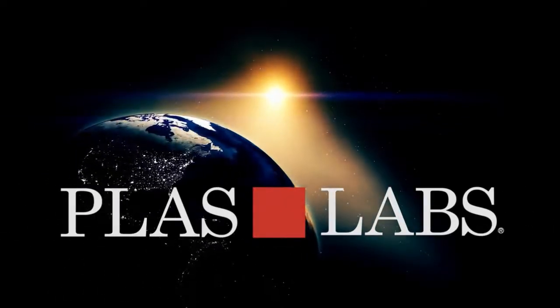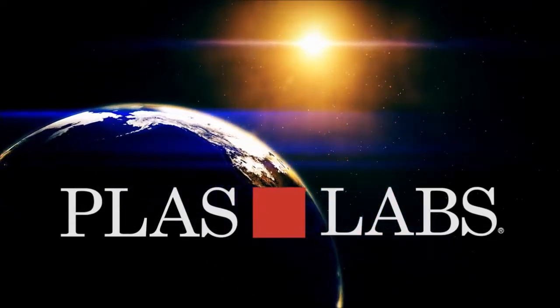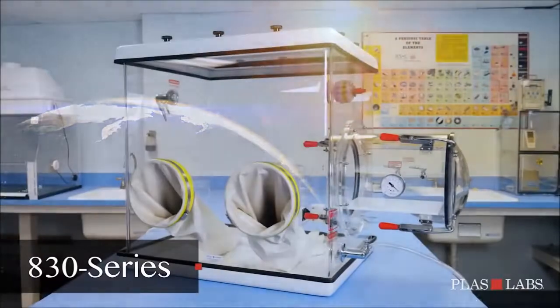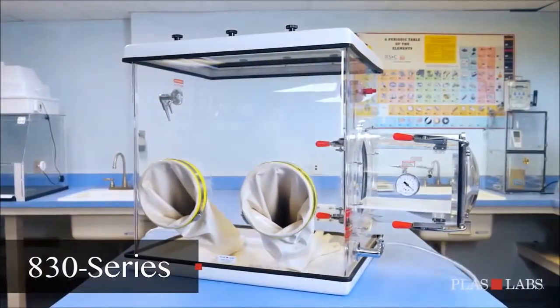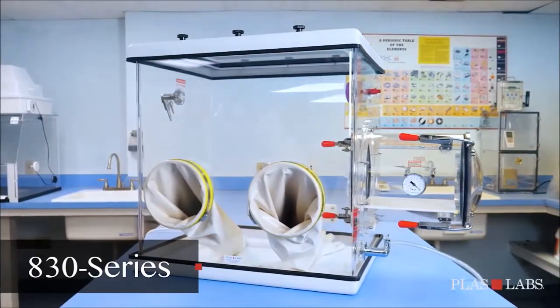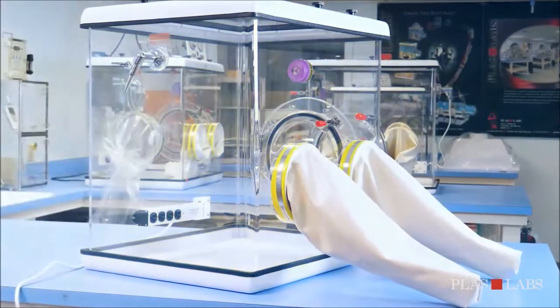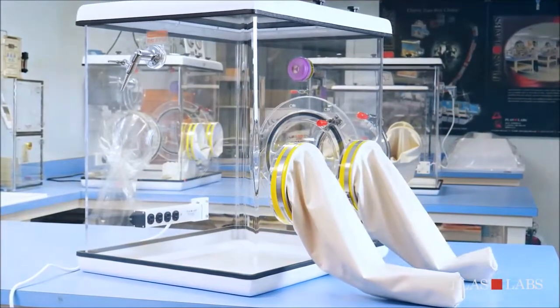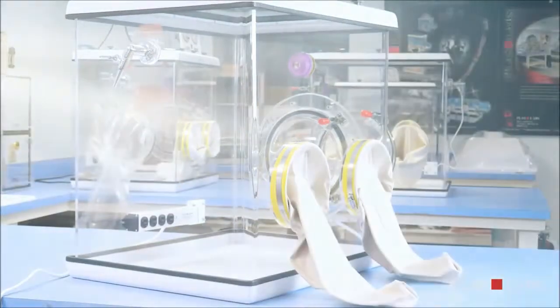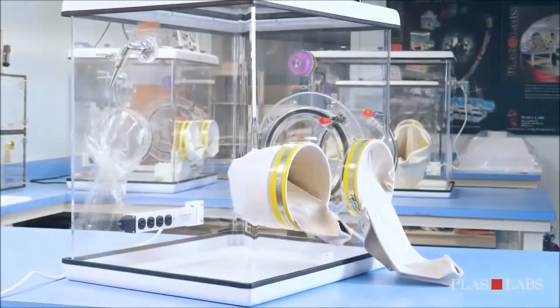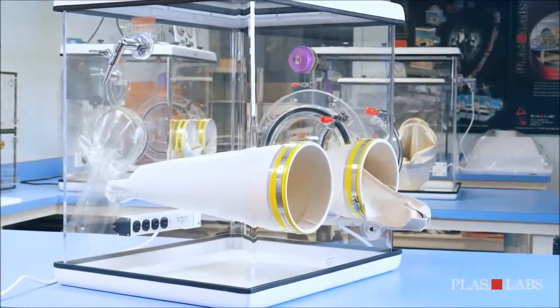Plaslabs, world leaders in acrylic containment and isolation technology. The 830 series compact glove box is a completely sealed glove box for isolation and/or containment. The 830 series has been developed to minimize drafts and maximize the effectiveness of your analytical balance. It can also be used with any inert gas to reduce oxygen and moisture levels inside the glove box.